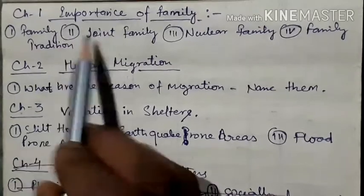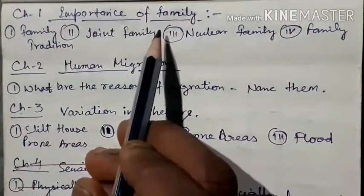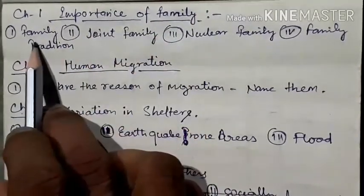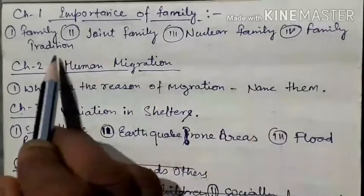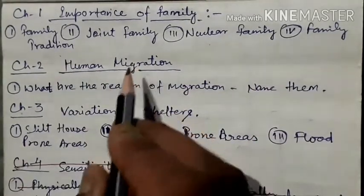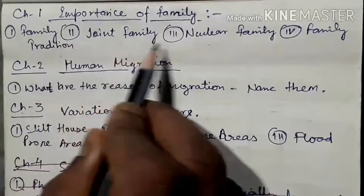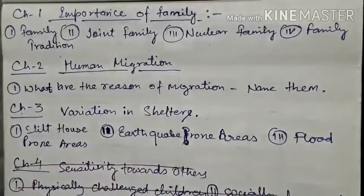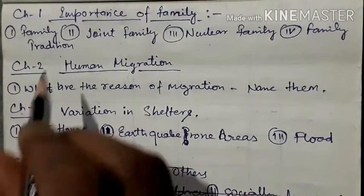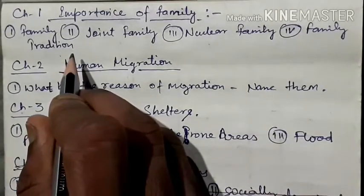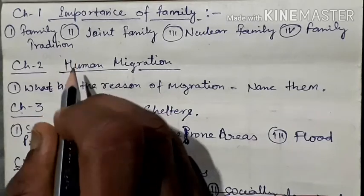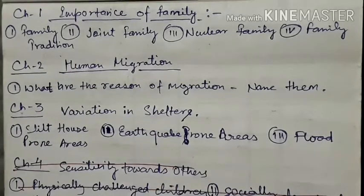First question from chapter one: importance of family, what is family, joint family, nuclear family, family tradition. I know that you all are familiar with all these four questions. We have already seen all these four questions in chapter number one. These four questions are important questions for your final exam, so write them down separately. Mention chapter number one, four questions, and complete it in your copy.